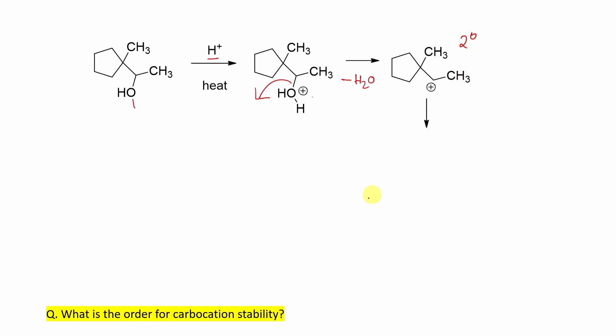By the way, students, we know the correct order for carbocation stability is tertiary greater than secondary, greater than primary, greater than methyl. By the way, often students make mistakes - they consider methyl is primary carbocation, methyl plus. No, no, no, no. Methyl is methyl. Primary is different. For example, ethyl is primary, not methyl.